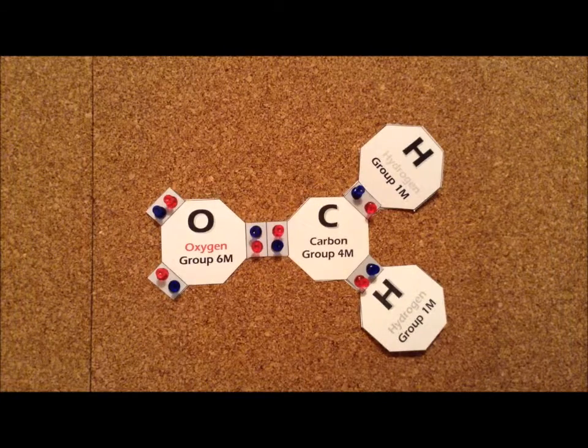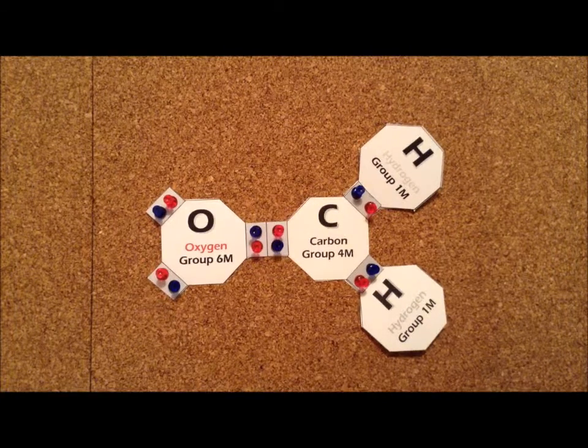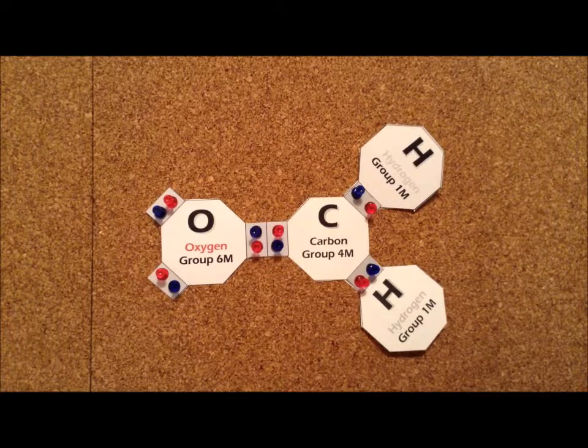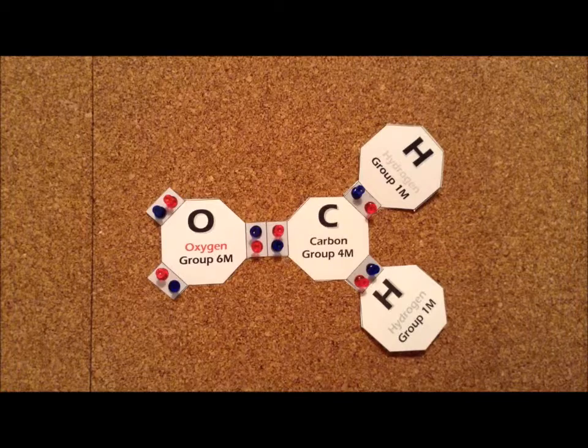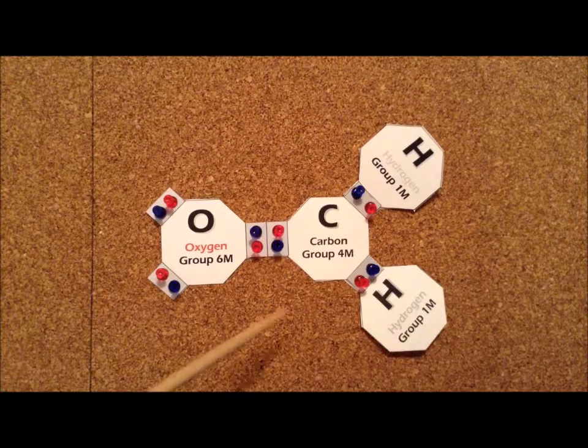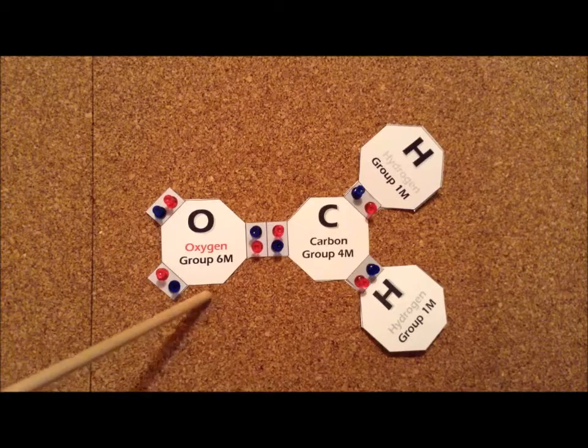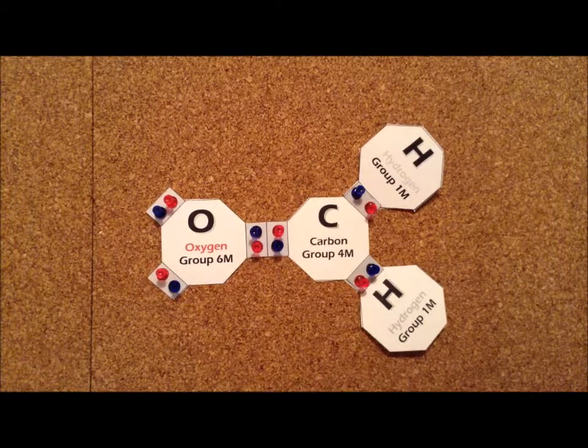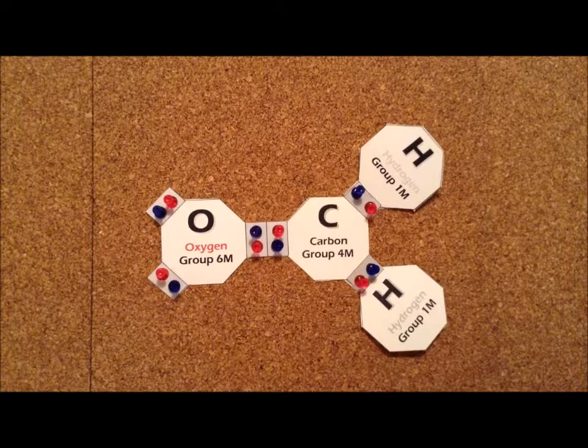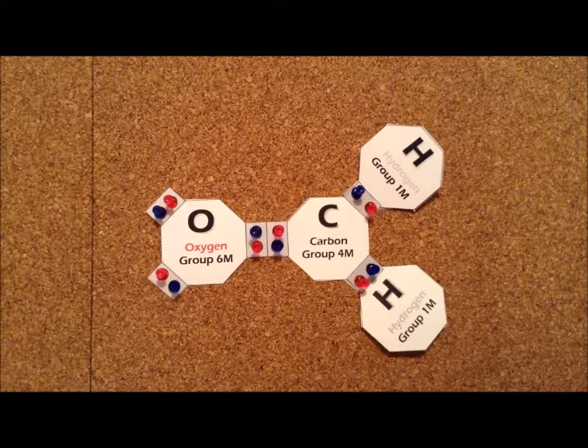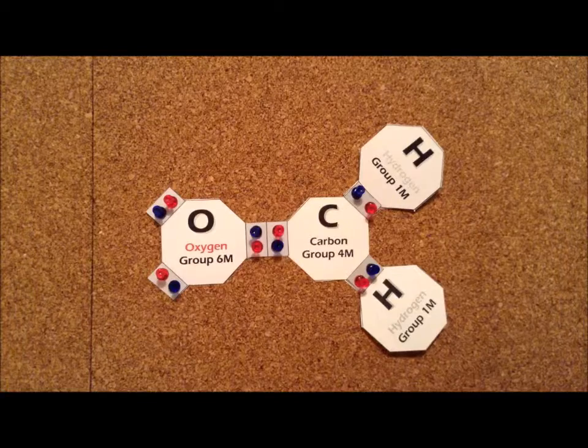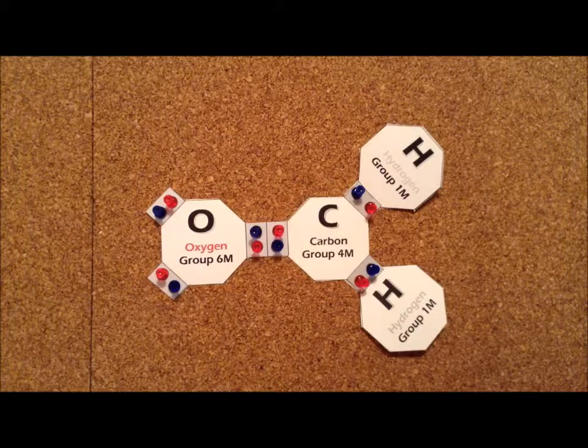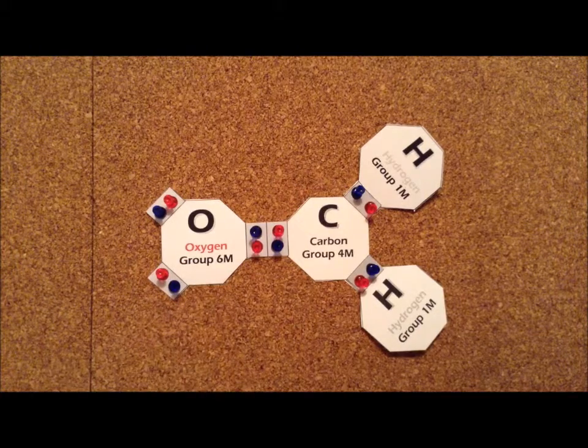The important organic compound formaldehyde has the chemical formula H2CO. Each carbon contributes 4 electrons, each oxygen contributes 6, and the hydrogens each contribute 1, so we have a total of 12 electrons for this system.